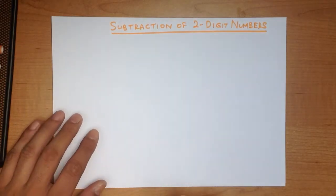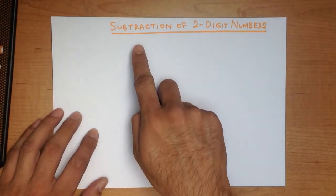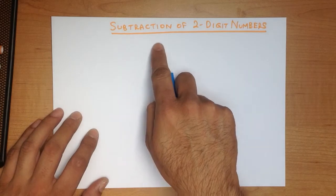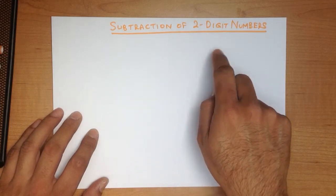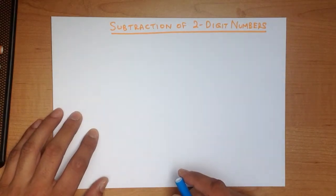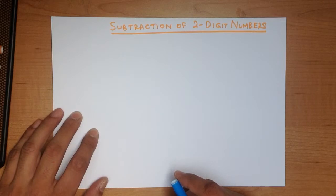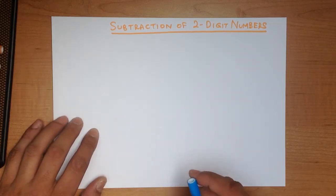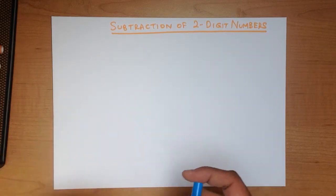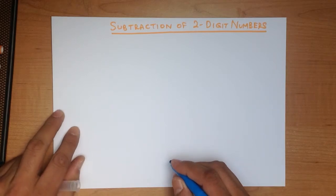In this tutorial, we are going to go through subtraction of two-digit numbers using the vertical format. Let's start with a nice easy example.